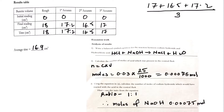The next question: calculate the number of moles of acid in the conical flask. Using the formula n = C × V, where n is moles, C is concentration, and V is volume: moles = 0.03 × (25 ÷ 1000), converting 25 centimeter cube into decimeter cube. This gives the number of moles of HCl as 0.00075 mol.